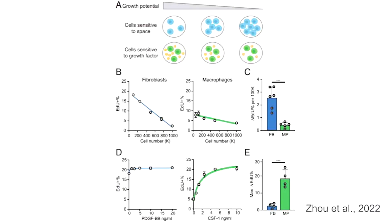It is known that the population of fibroblasts grows based on the amount of space available, whereas macrophage populations grow based on growth factors such as CSF1, which is secreted by fibroblasts. We used this information to develop our hypothesis, which is that fibroblasts control the macrophage population during the early phase of cardiac remodeling.